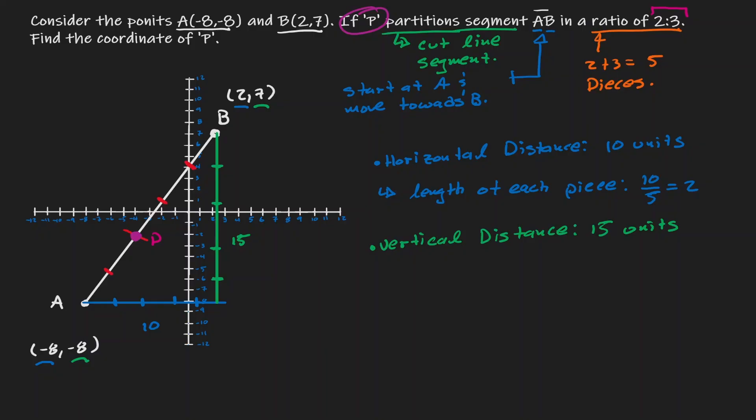Now let's define the length for each of those pieces. The total length was 15, we want to cut it into 5 equivalent pieces, therefore each piece has a length of 3.